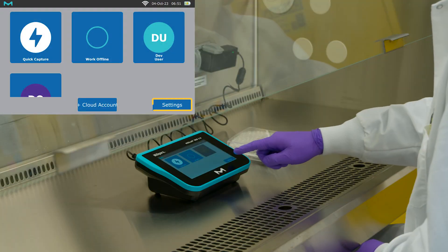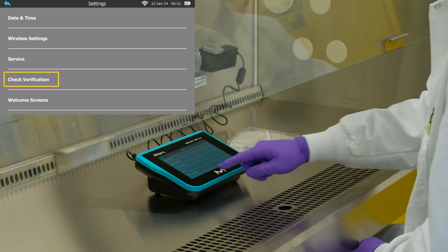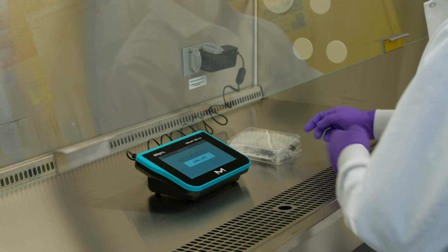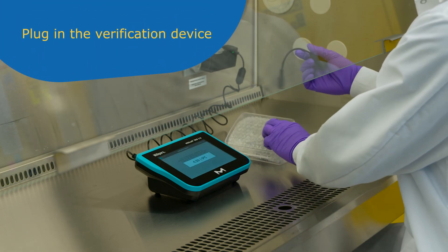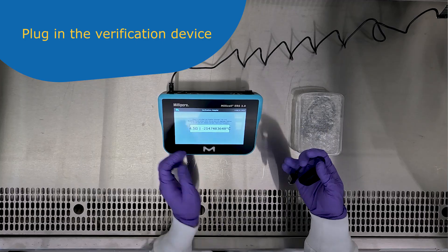Then go to settings on the touch screen and click on check verification. Once complete, plug the verification device into the port labeled sensor.